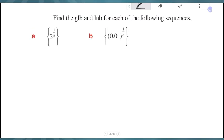Find the greatest lower bound and least upper bound for the sequences 2^(1/n) and 0.01^(1/n). For 2^(1/n), when n equals infinity, 1/infinity is almost 0. The power of 0 is equal to 1.